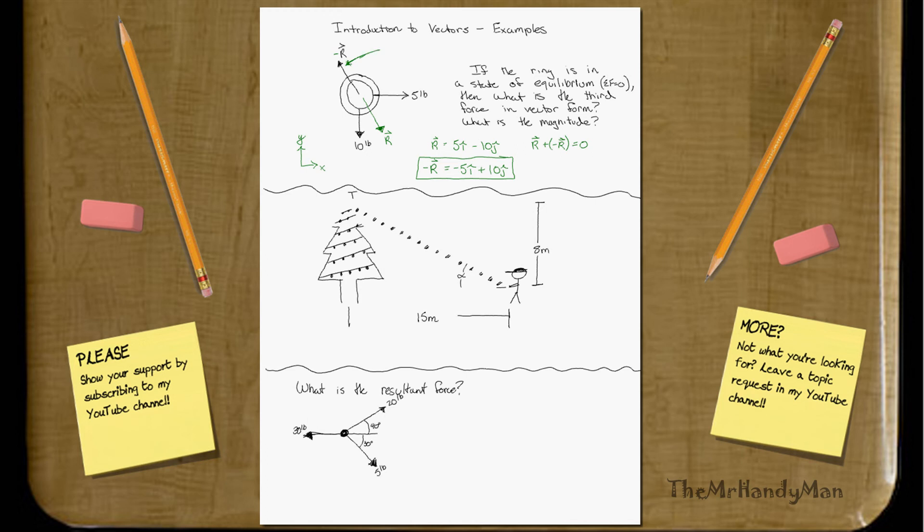Now, what's the magnitude of it? We just use the Pythagorean Theorem. And you find that the magnitude of negative r, because we wanted to know that's the third force, right? Using the Pythagorean Theorem, we will have negative 5 squared plus 10 squared, which will equal 11.18 pounds. And that's how we'll balance that ring out, so that it won't be moving, and be in a state of equilibrium.